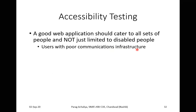Disabled people can also include users with poor communication infrastructure. For example, if you are at home and do not have proper internet connectivity, you will be facing a communication problem — that means you have poor communication infrastructure at your end. Someone in college with very good infrastructure has good communication, whereas someone at home with poor connectivity represents poor communication infrastructure.